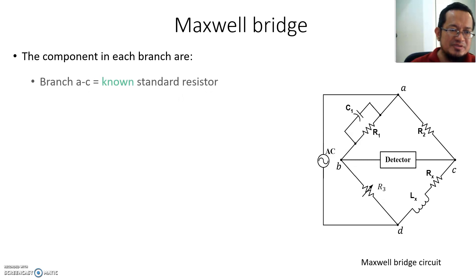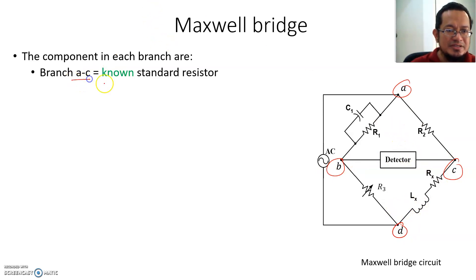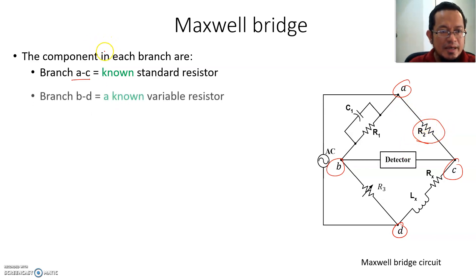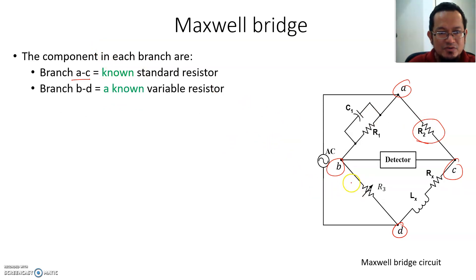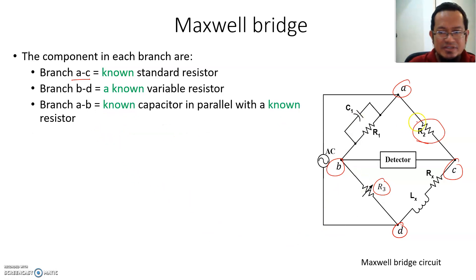The components for each branch: let's say I put nodes A, B, C, and D here. For the branch between nodes A and C, we insert a known standard resistor R2. For the branch between B and D, you have a known variable resistor R3, which you can vary to a defined value. Between nodes A and B, you have a known resistor in parallel with a known capacitor.